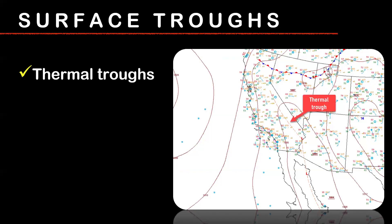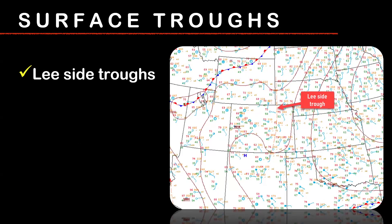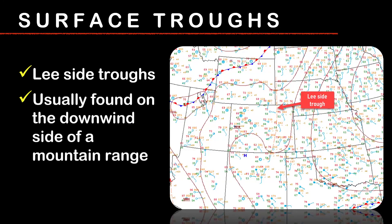If you go out west, in the southwest U.S., the pressure trough out there is pretty much ubiquitous most of the year. We call that a thermal trough, something you'll typically find in the desert southwest — generally pretty benign. On the leeward side of a mountain range — you see this a lot on the Rockies and also in the Appalachians — you'll see a leeward trough, which is also generally pretty benign.